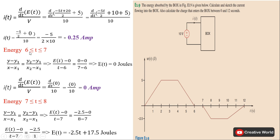Calculating the energy between time interval 6 and 7: putting the x and y coordinates into the line equation gives 0 joules of energy. Taking its derivative also results in 0 ampere, so through 6 to 7 we get 0 ampere.